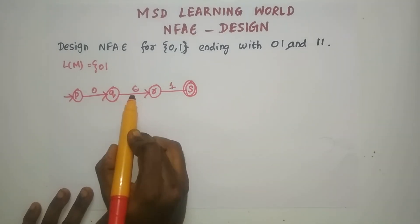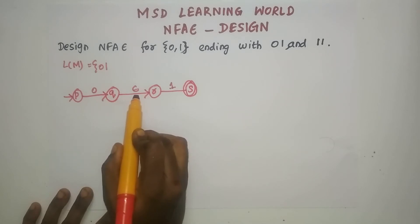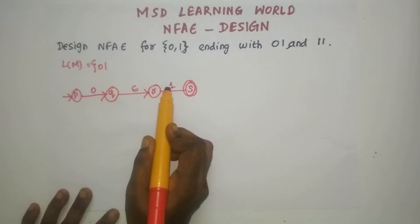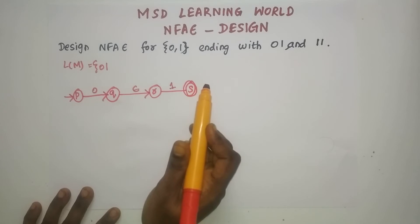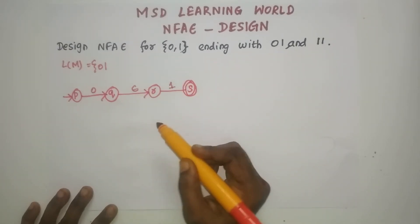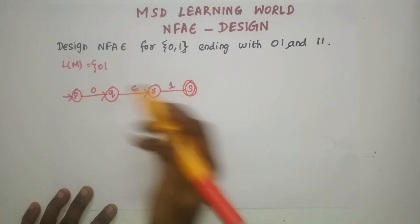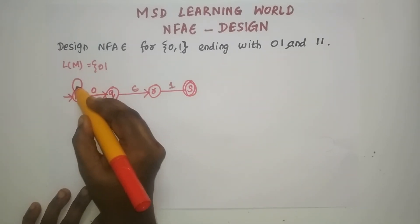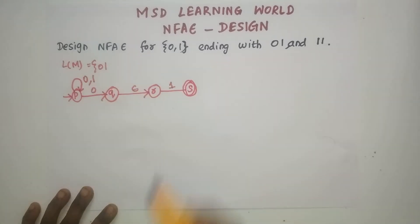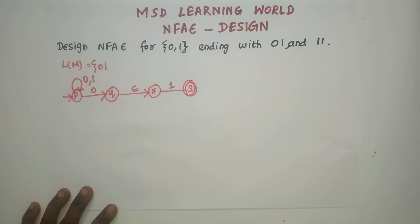Epsilon can be placed in the middle of 0 and 1, before 0, or after 1. It is also possible to have Epsilon after 1. You can have any number of Epsilon transitions. For the initial state, you can have a self-loop on 0 and 1. This completes the NFA Epsilon machine that accepts the set of all strings over {0,1} ending with 0,1.